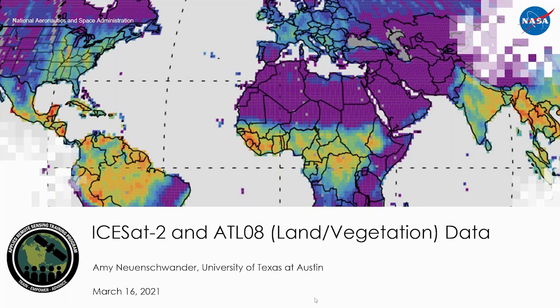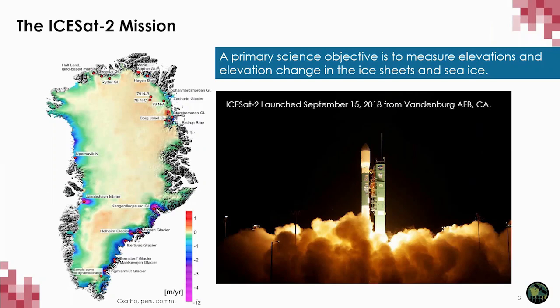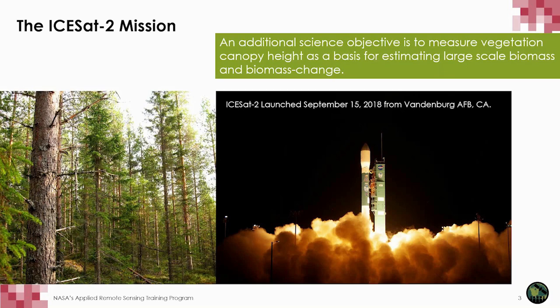My name is Amy Neunschwander and I'm with the University of Texas at Austin. I'm going to talk about the ICESat-2 mission, one of two laser altimeter missions that NASA recently launched into space. ICESat-2 has great applications not only for ice but also for land and vegetation. The ICESat-2 mission has a primary science objective to measure the elevation and elevation change in the ice sheets and sea ice, examining the impacts of global warming and climate change on polar areas. An additional science objective is to measure vegetation canopy height as a basis for estimating large-scale biomass and potentially biomass change over time. ICESat-2 was launched on September 15th, 2018 from Vandenberg Air Force Base in California.